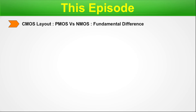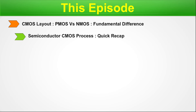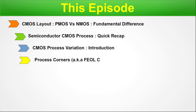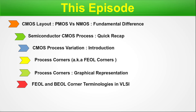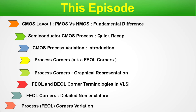In today's episode, we will cover the basic CMOS layout and point out the fundamental difference between CMOS and NMOS. Then we'll do a quick recap of the semiconductor CMOS process, followed by a short introduction to CMOS process variation. We'll become familiar with process corners, also known as FEOL corners, and show a common graphical representation. We'll also cover FEOL and BEOL corner terminologies frequently used in VLSI, the detailed nomenclature of FEOL corners, and process corner variation. At the end, we will summarize the entire discussion.